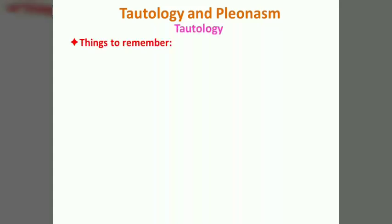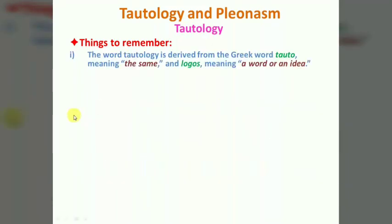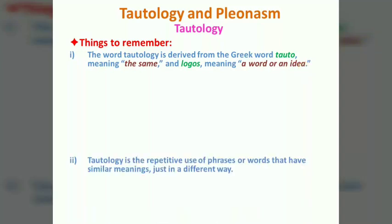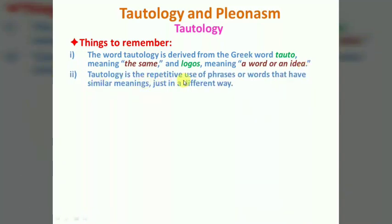Let's start with Tautology — things to remember. The word Tautology is derived from the Greek word 'tauto' meaning 'the same' and 'logos' meaning 'a word or an idea.' Tautology is the repetitive use of phrases or words that have similar meanings, just expressed in a different way.